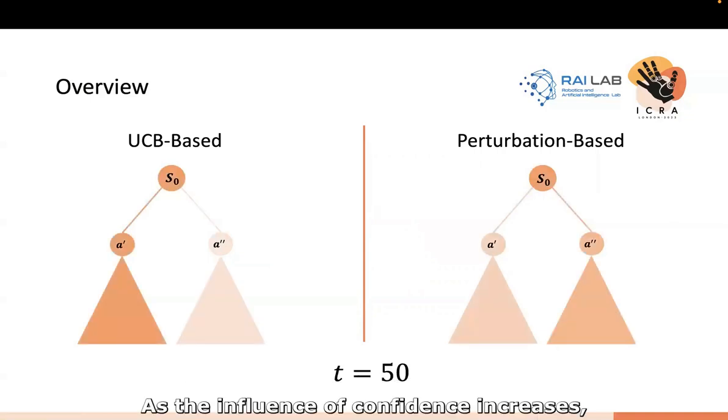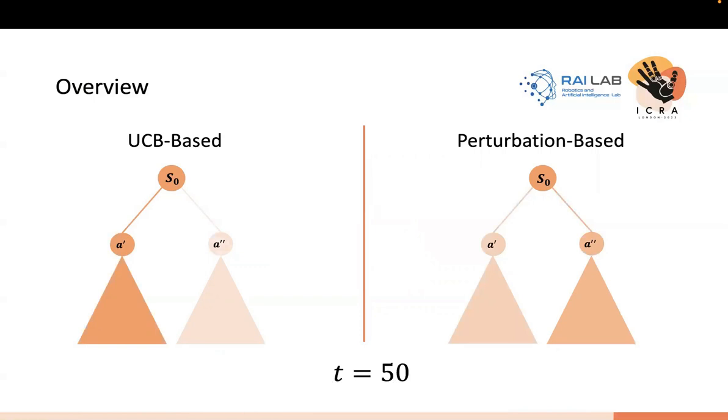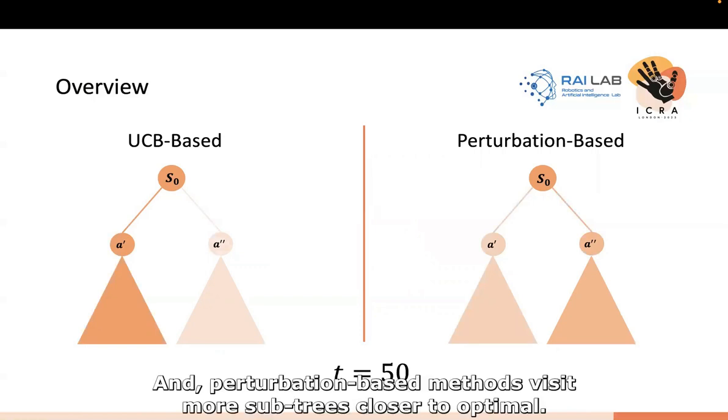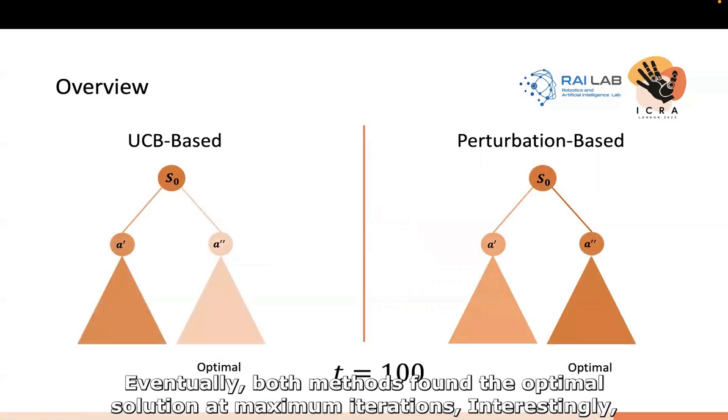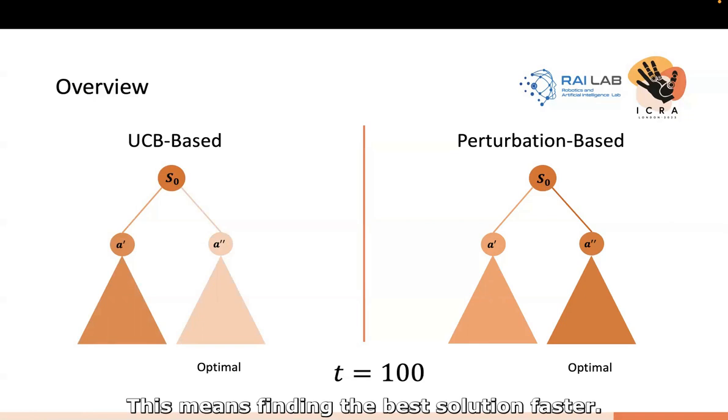As the influence of confidence increases, the UCB-based method also explores subtrees of other actions, while perturbation-based methods use more subtree closer to optimal. Eventually, both methods found the optimal solution at maximum iterations. Interestingly, the perturbation-based method shows that subtrees with optimal solutions are darker in color. This means finding the best solution faster.